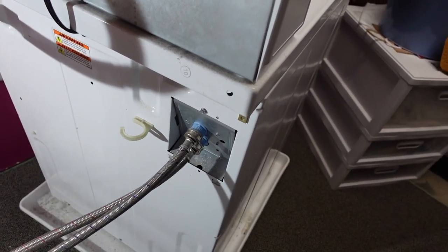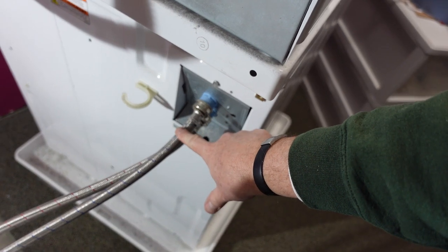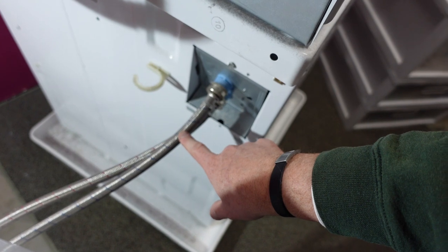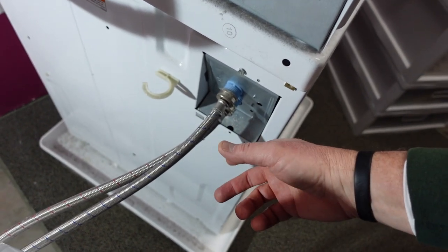I got the washing machine pulled out here and these are the hoses going into it. This might be a good time to inspect your hoses. Especially if you have regular rubber hoses, they will over time wear out. I don't know what the life expectancy is, several years.